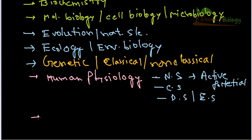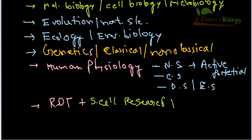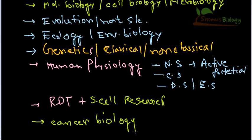After human physiology, you also need to learn recombinant DNA technology, or RDT, which is a very vital part. Along with RDT, newer topics like stem cell research are very important. Cancer biology is another topic that is very, very important. These newer developments are high-priority areas for CSIR NET.